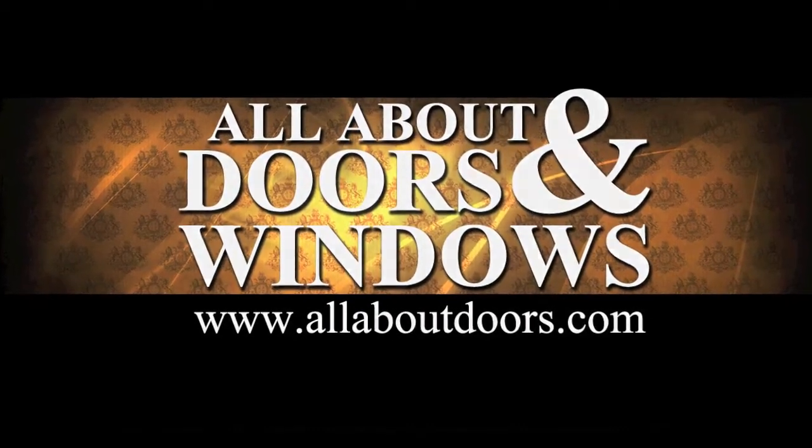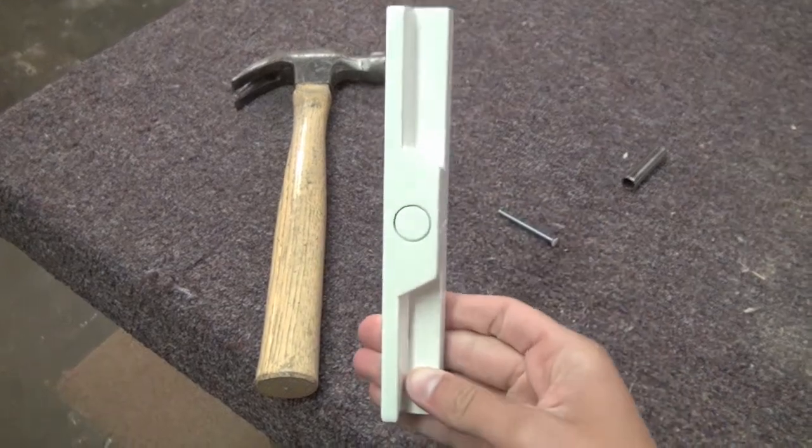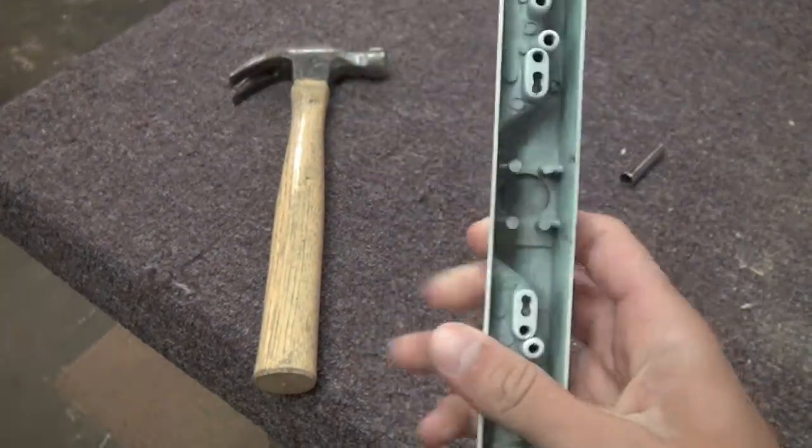In this video, we're going to punch out a hole in our patio door handle, so we can insert a cylinder and make the sliding door lockable by key.